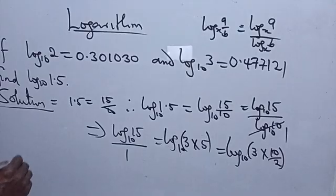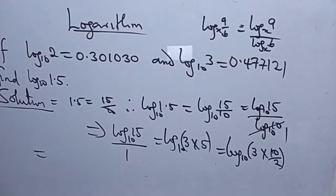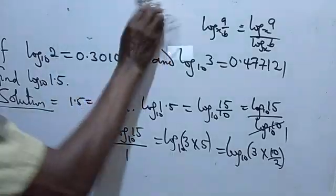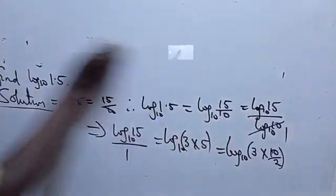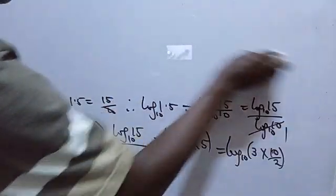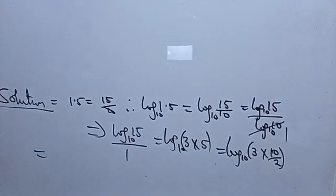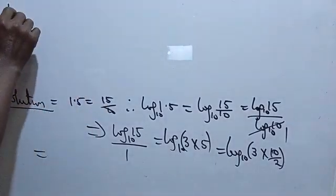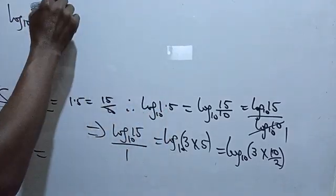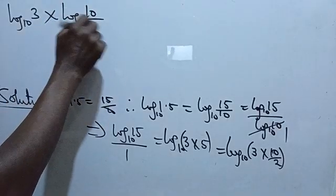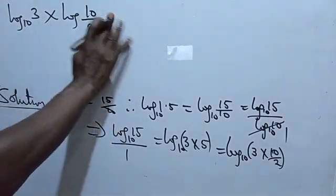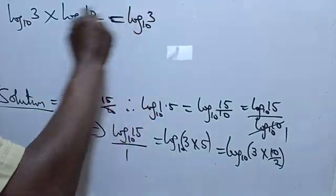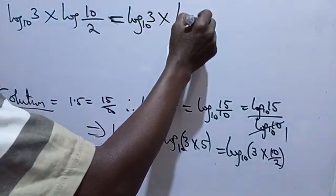So this gives us log base 10 of 3 multiplied by 10 over 2. We can separate that as log 3 base 10 plus log(10/2) base 10, which is log 3 base 10 plus log 10 base 10 minus log 2 base 10. We assume the base throughout is 10.